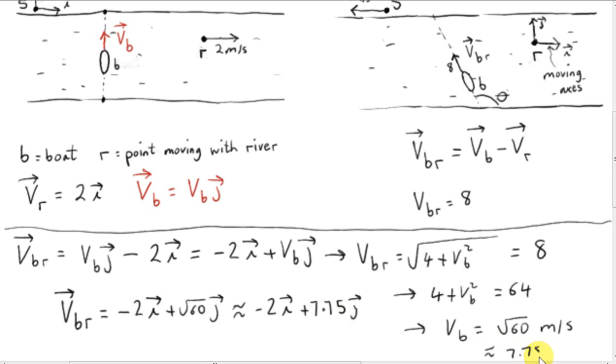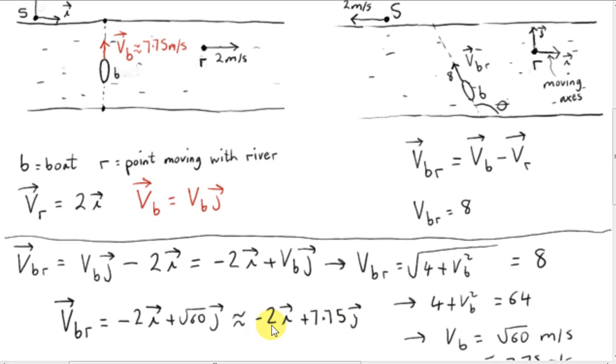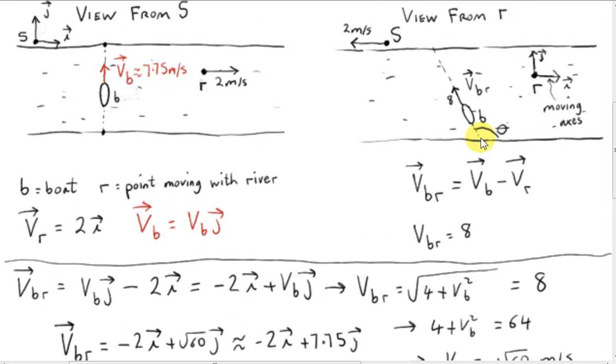As you can see, vector VBR has an I component. VBR is not a vector pointing entirely in the J direction. So, from the point of view of the river, point moving in the river, the boat appears to be going upstream. So, if this is a point in the water where the boat entered the water, this is a point that's in the water, so it's moving with speed 2 meters per second to the right. Then the boat is not heading towards a point that's in the water directly across from this point. This point in the water is also moving with speed 2 meters per second. It's not heading towards that point. It's heading towards a point that's further upstream.